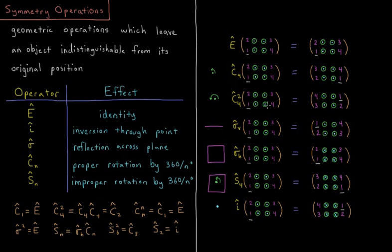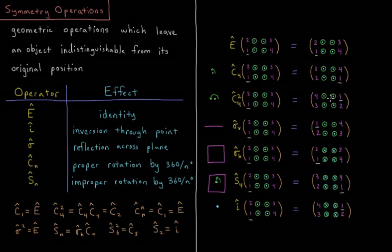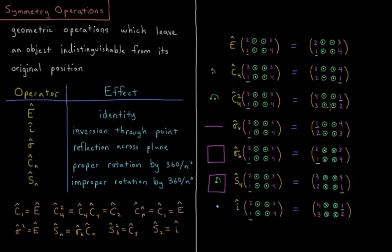So c2 would be 180 degrees: one goes to three, four goes to two, three goes to one, two goes to four, all still pointing out of the plane. Notice again that I went counter-clockwise relative to the axis coming out at me.